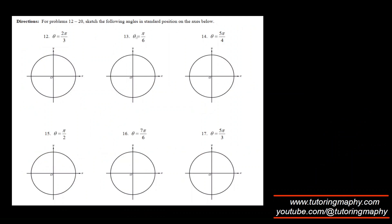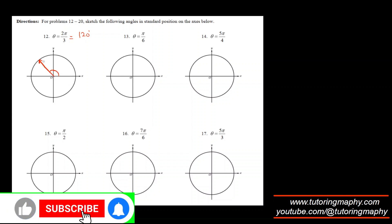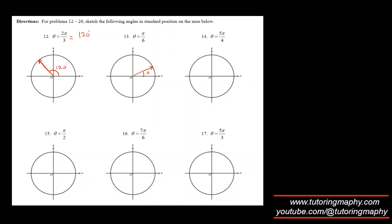This is a pretty easy section where we just need to sketch these angles, so we just need to have an idea about the quadrant. If π = 180°, then 2π/3 ≈ 120°. Since 90° is here, 120° is a bit further — somewhere around here. π/6 is clearly 30°, so it'll be somewhere over here. 5π/4 is 225°, putting it in quadrant 3, 45° past 180°.